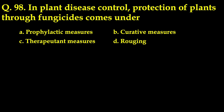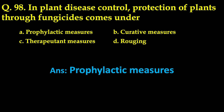The next question: in plant disease control, protection of plants through fungicides comes under — the correct answer is prophylactic measures. The first principle of plant disease management is prevention, which includes disease management techniques applied before infection, i.e., the plant is protected from disease by application of preventive measures. The second principle — therapy or curative action — functions with measures applied after the plant is already infected.